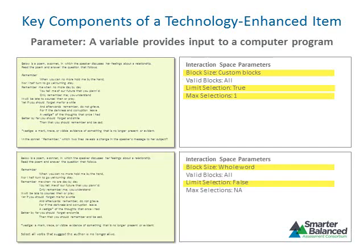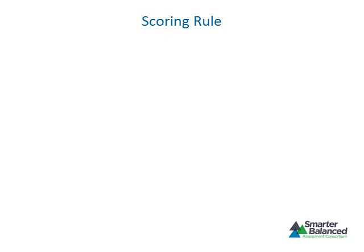By adjusting the values for each interaction space parameter, a single technology-enhanced item type can be used to create a wide variety of items. For a second item using the same poem as stimulus, the block size is set to whole word and LimitSelection is set to false, allowing the student to make as many selections as necessary. All technology-enhanced items have a scoring rule associated with them—the scoring rule provides directions to the computer about the logic to be followed to score a response. In some cases an item will have only one correct response; in other cases there may be many possible correct responses.